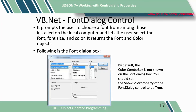Visual Basic.Net Font Dialog Control. It prompts the user to choose a font from among those installed on the local computer, and lets the user select the font, font size, and color. It returns the font and color objects. When you display the font common dialog box, the available fonts for the system display. After the user makes a selection, you can use the font property of the dialog box object. You may want to assign the font property to the font property of other objects on your form. By default, the color combo box is not shown on the font dialog box. You should set the show color property of the font dialog control to true. When the user clicks on the font menu item, the font dialog box appears on the screen. Execution halts until the user responds by clicking OK or Cancel.